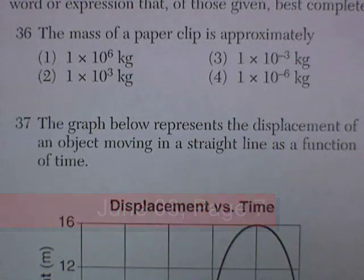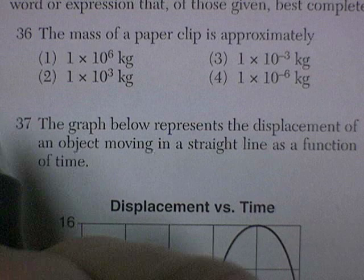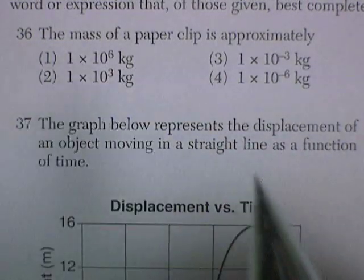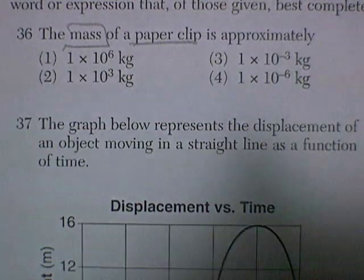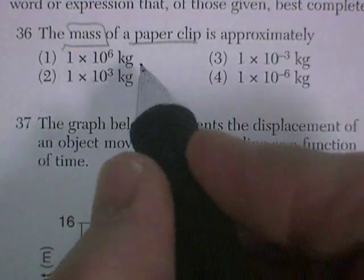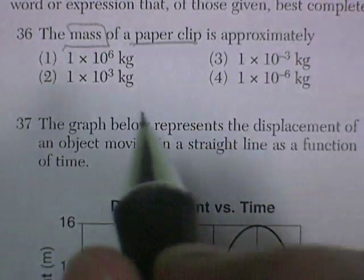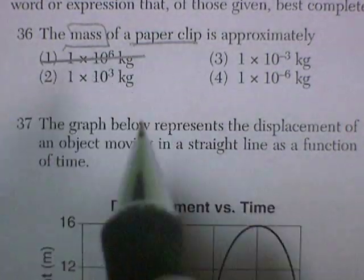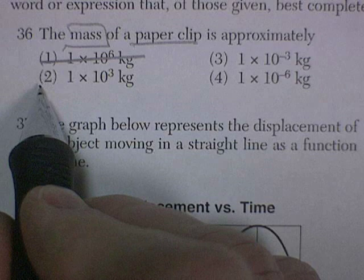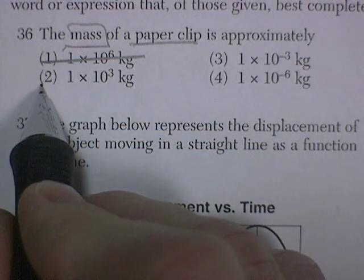June '08, page 7. Starting with question 36. The mass of a paperclip, approximately. Let's see, 1 times 10 to the 6 is one with six zeros. Yikes, that's a big paperclip. 1 times 10 to the 3, a thousand kilograms.